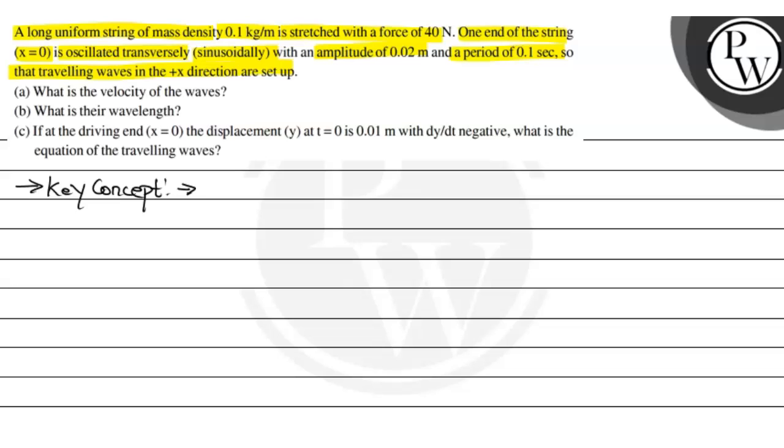First, we need to solve velocity in terms of tension and mass per unit length. So that is the formula: under root T by μ. T is tension and μ is the mass per unit length.